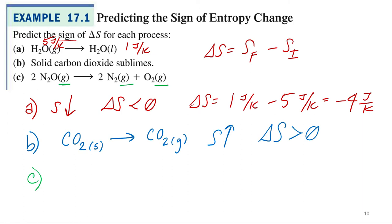And so, yeah, when you're breaking down something into smaller components, you're going to increase the entropy. It's getting more disordered. And it can be even easier than that. If they're all in the same phase, all you have to do is count up the moles.